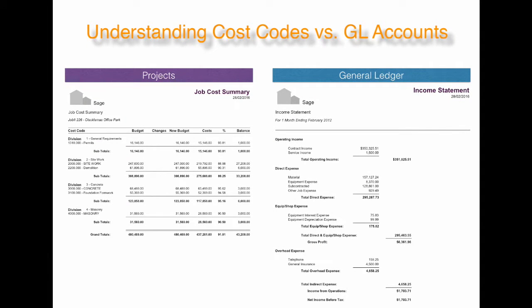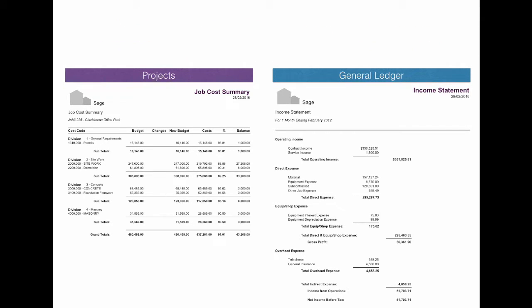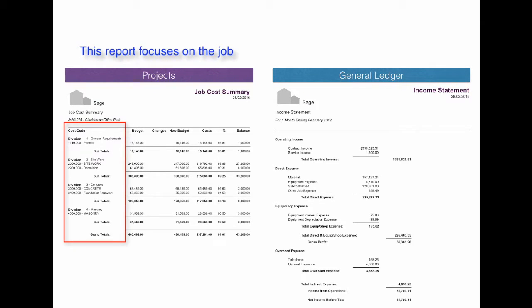Understanding the difference between cost codes and GL accounts is important when setting up your new company in Sage 100. As you can see on the two reports here, we use cost codes for projects to assist in determining where costs are being spent. The cost codes are set up based on the various activities and tasks on the project.